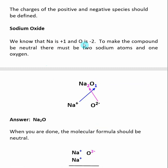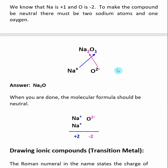After you determine what elements you have, the next thing you want to do is combine them such that their charges cancel out, so the charge of the final compound is neutral. Sodium is +1 and oxygen is -2, so I'm going to need two sodiums for the charges to cancel. A common trick is to draw out each individual species — sodium+ and oxygen2− — and realize that in the compound, the charges turn into subscripts. The -2 charge on oxygen means I need two sodiums; the +1 charge on sodium means I need one oxygen.